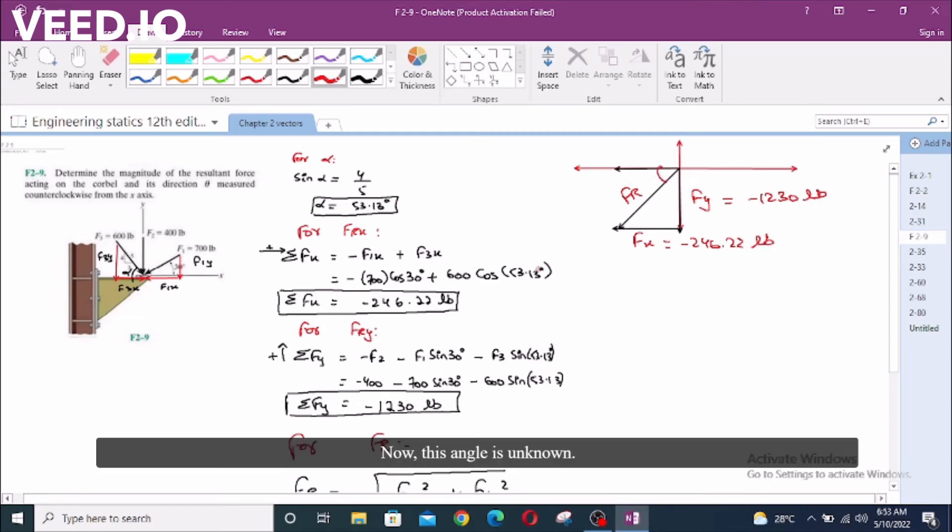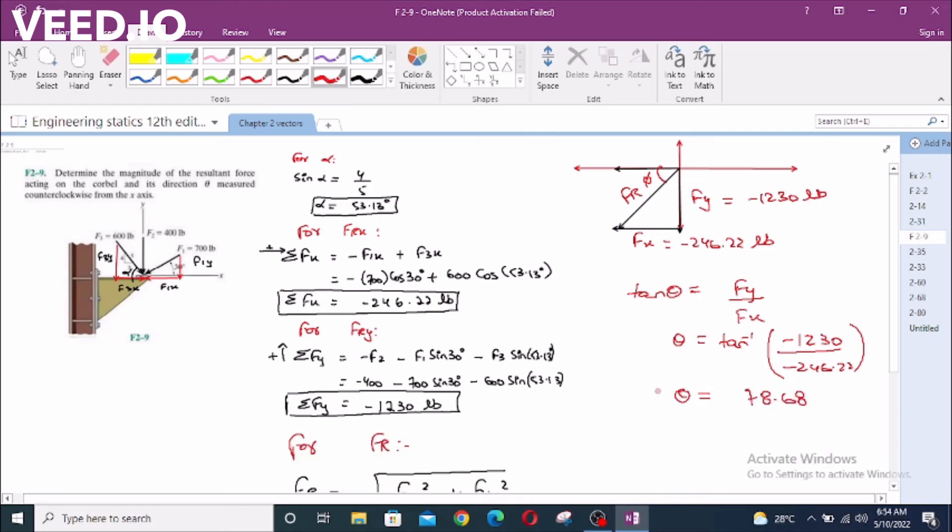Now, this angle is unknown. Let's call this phi. Phi can be found out. Tangent phi equals Fy over Fx. Phi equals tangent inverse of Fy which is negative 1230 divided by negative 246.22. Phi equals 78.68 degrees.